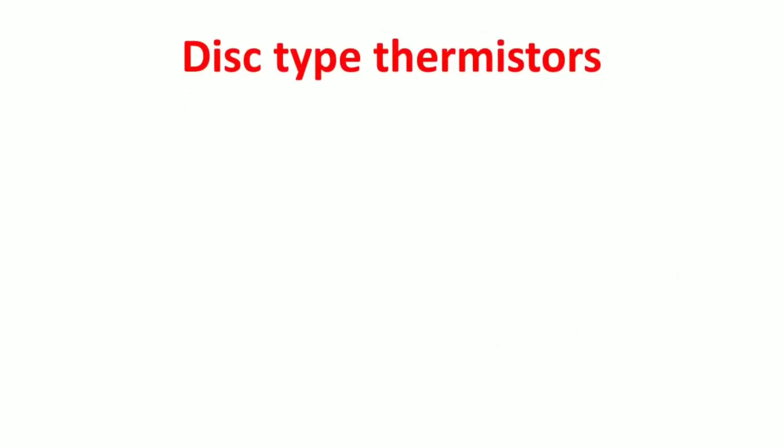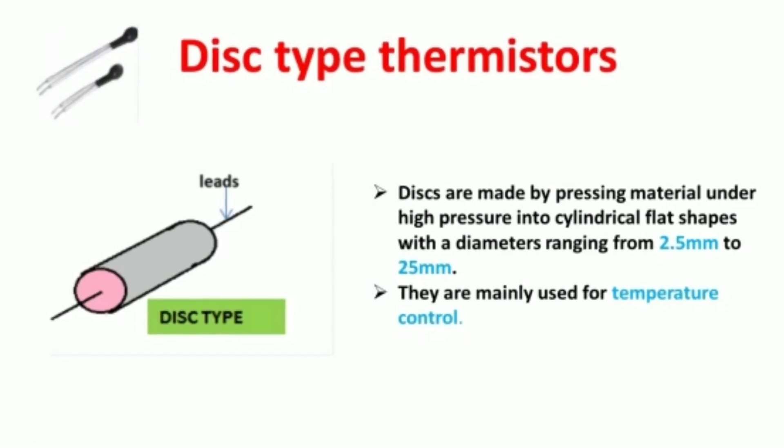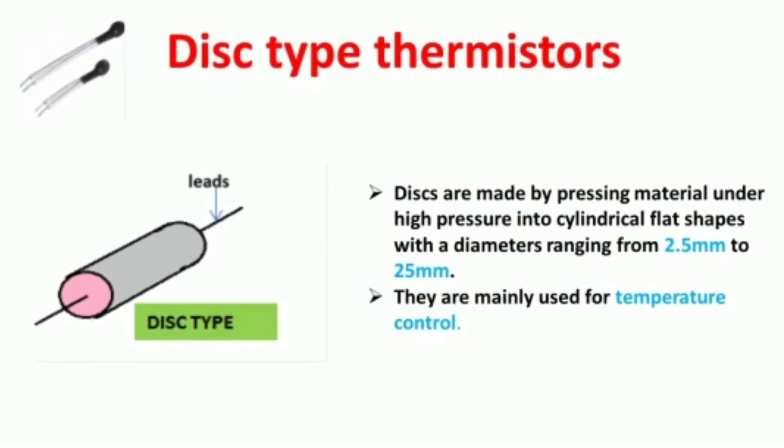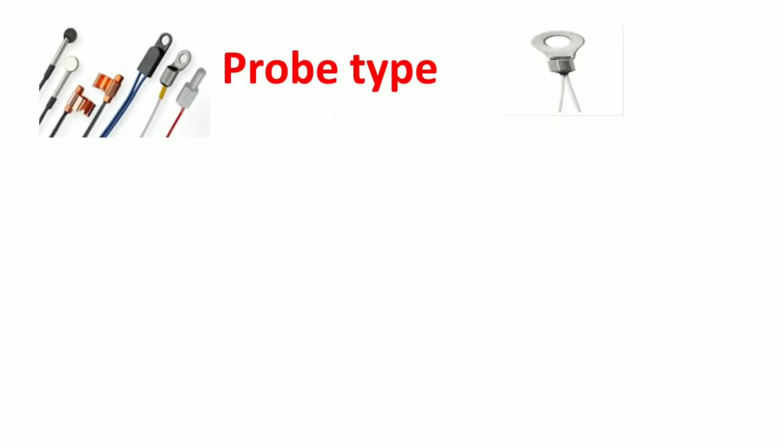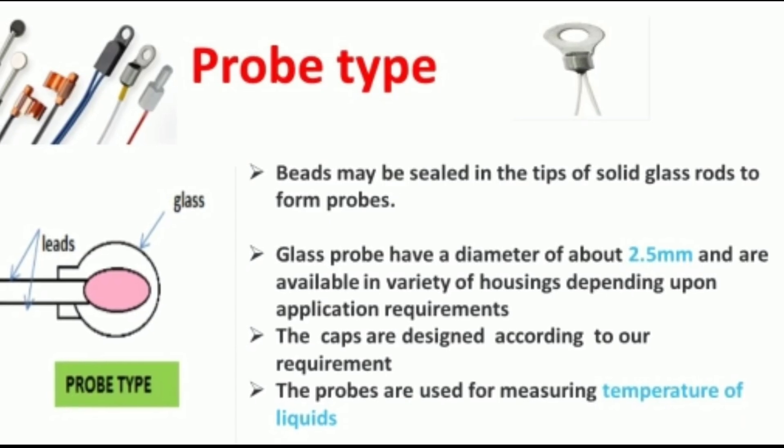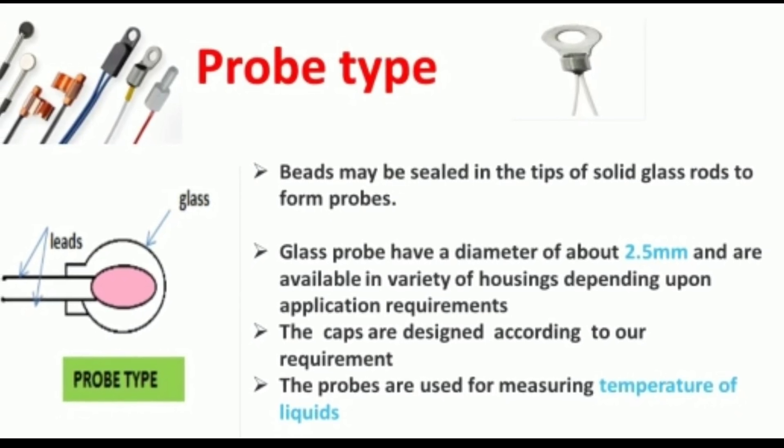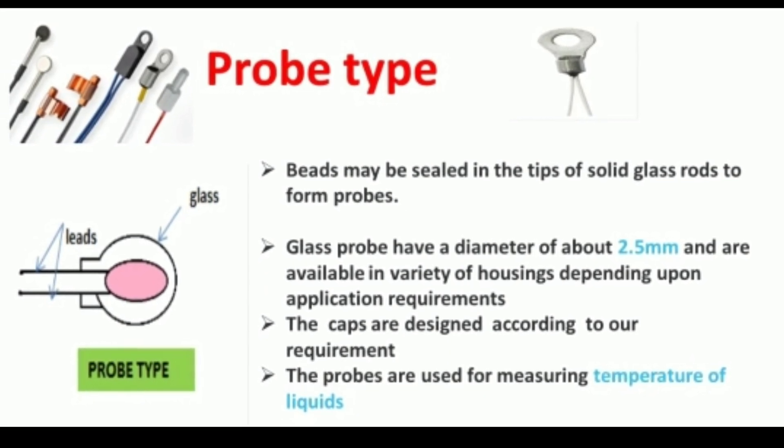Disk type thermistors are mostly used for temperature control and are made by pressing the material under high pressure into cylindrical flat shapes with diameter ranging from 2.5 mm to 25 mm. In probe type, beads are sealed in tips of solid glass rod to form probes. They have diameter of 2.5 mm and the probe caps are designed according to our requirement. These are used for measuring temperature of liquids.